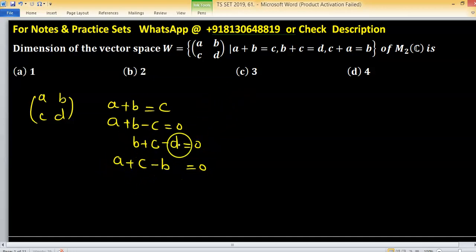Using these three equations, write a matrix, coefficient matrix. So one, one, minus one, zero; zero, one, one, minus one; one, minus one, one, zero. This is the coefficient matrix.